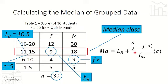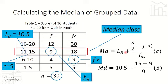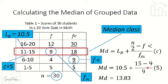Substituting into the formula: median equals 10.5 plus (30 over 2 minus 9) over 9, times 5. Applying PEMDAS, 15 minus 9 equals 6; 6 divided by 9 times 5, then plus 10.5 gives us a median of 13.83. So the median for this example is 13.83.